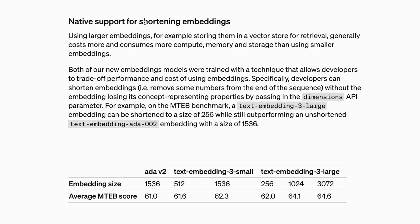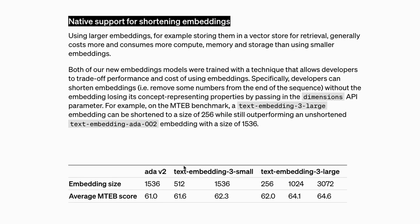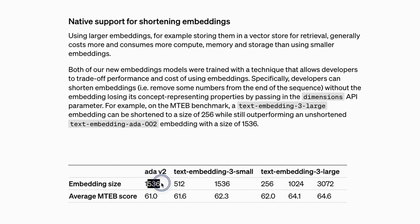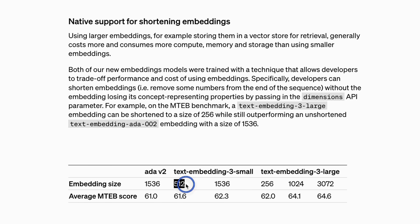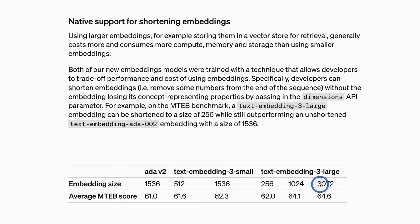The most interesting part of this release is the native support for shortening embeddings. The ada-002 model had an embedding size of 1536. The small embedding model comes in two flavors: the smallest size you can use is 512, going up to 1536. For the larger model, there are three flavors: 256, 1024, and 3072. Larger embedding size will give you better performance. It seems they compute the embeddings at full size by default, but you can use just the first 256 or up to 1024 embeddings — so it's not really recomputing, you're just using a smaller portion of the embedding size.